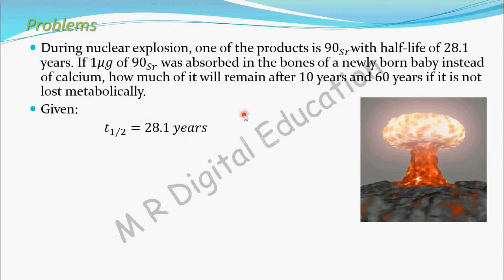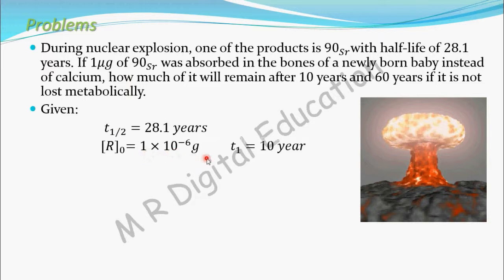Let's write down what is given. The half-life of strontium, t½, is 28.1 years. The initial concentration of strontium absorbed, R₀, is equal to 1 microgram, that is 1×10⁻⁶ grams. We need to find the concentration of strontium remaining after 10 years and after 60 years.